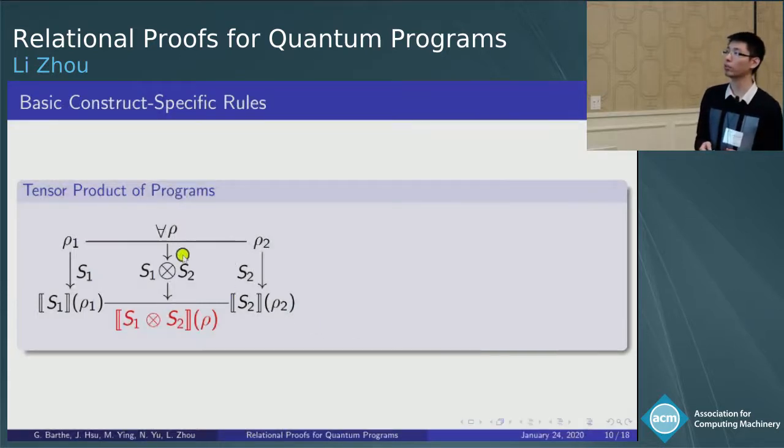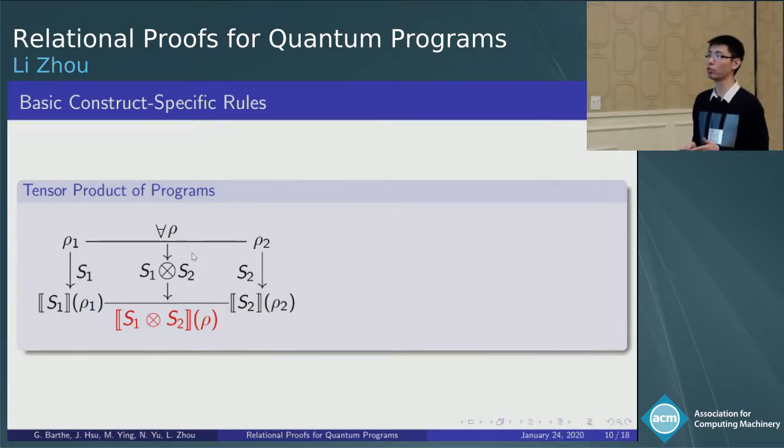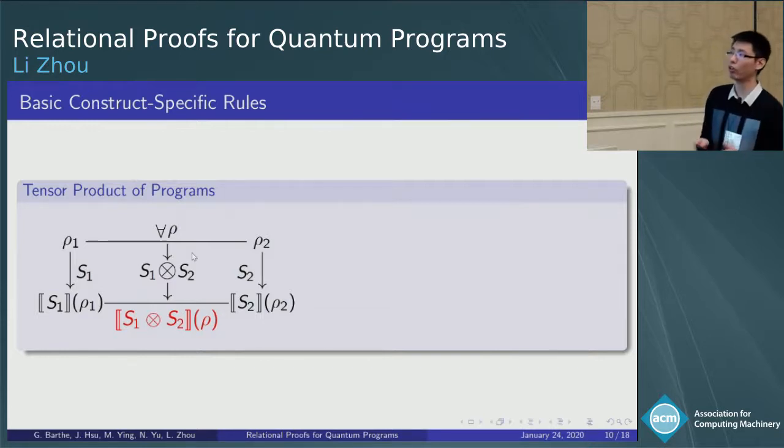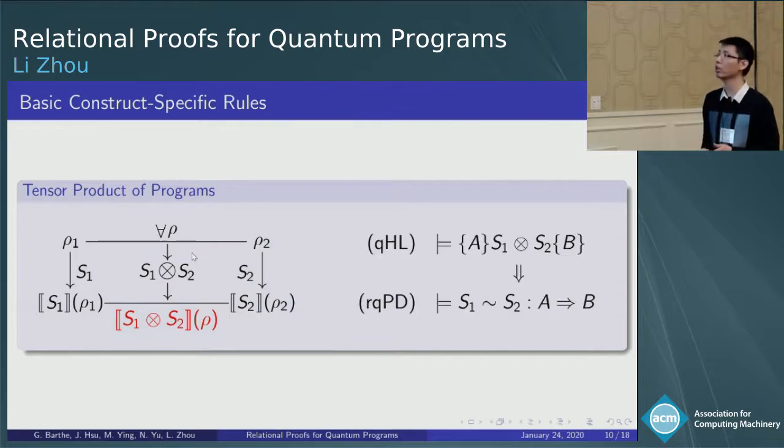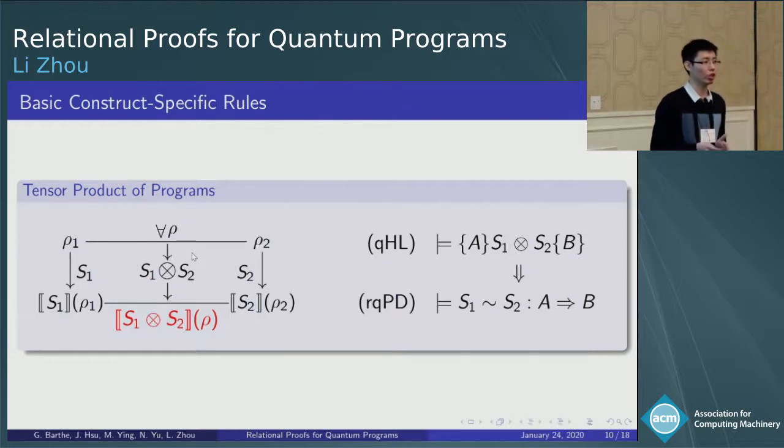We have a coupling rho with marginal rho1 and rho2, and if we apply the tensor program S1 tensor S2 directly on rho, and then we get the output S1 tensor S2 rho. It can be proved that this state is a coupling for S1 rho1 and S2 rho2. So, it's possible to establish rules directly according to the quantum Hoare logic, which was first proposed by Ming Shenying in 2011.